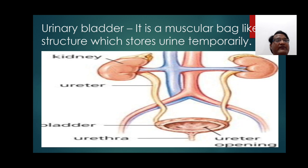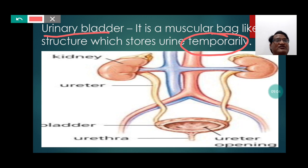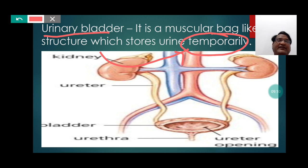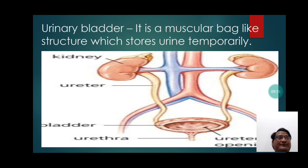The urine is stored in the urinary bladder temporarily, because after exceeding the urine volume of 900 ml, the urine is further released via the urethra.